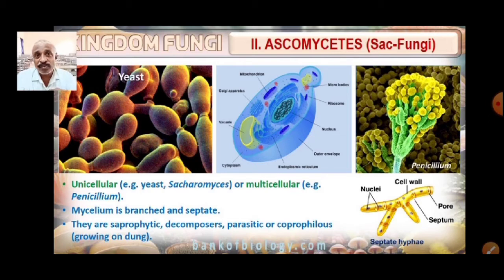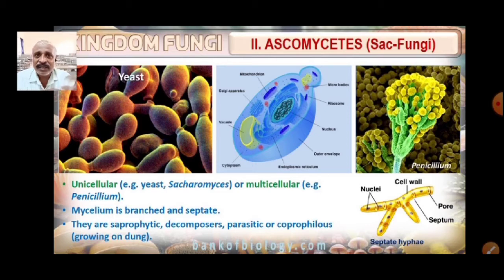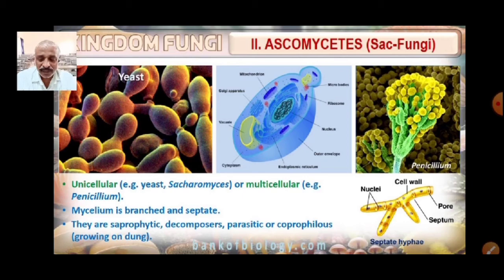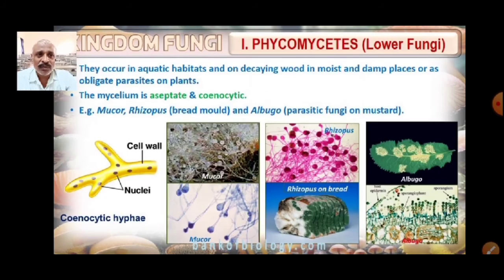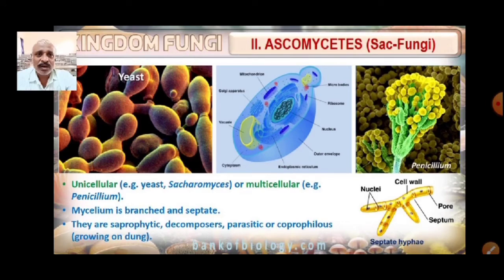Ascomycetes are saprophytic — they absorb food from dead and decaying organic substances, making them decomposers involved in decomposition. They can also be parasitic, living inside the body of other organisms. Coprophilous is another term — referring to fungi that grow on dung. Coprophilous fungi are also saprophytic.